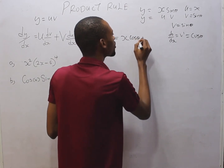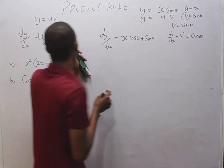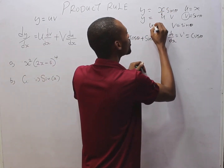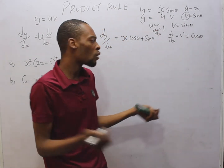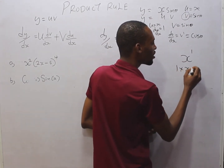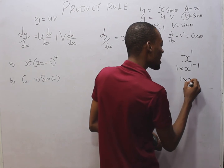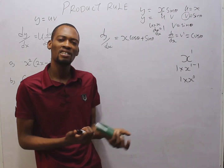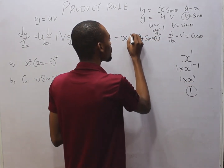So dv/ds is cos(θ). Then we add v·(du/ds): v is sin(θ), and we differentiate u where u equals x. du/ds equals 1, because x is the same as x raised to the power of 1. Applying the power rule: 1 times x to the power of 1 minus 1, which is x to the power of 0, and any number raised to the power of 0 is 1. That is why when you differentiate x you get 1.